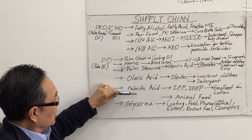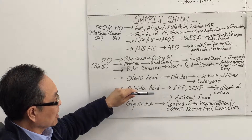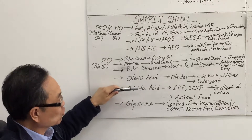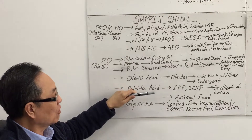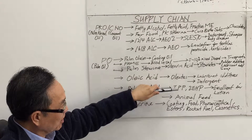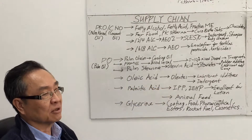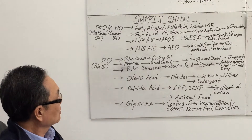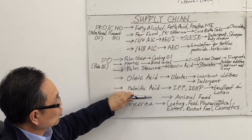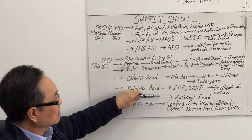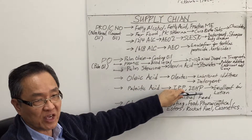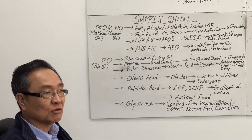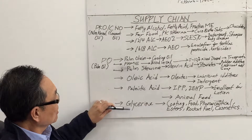The next one is palmitic acid. Palmitic acid can be converted by reacting with isopropyl alcohol or 2-ethylhexyl alcohol to make IPP or 2-EHP, used as an emollient in personal care products such as body lotion. Palmitic acid can also be used as a food-grade ingredient, directly as an animal feed to energize the meat of cows to make it leaner.